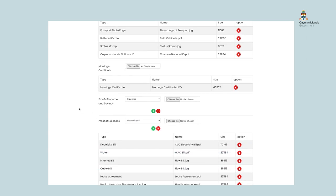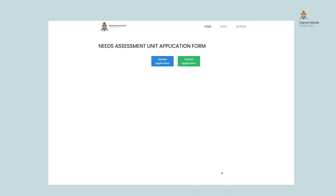When you have completed all six sections of the form with the required information, you will be presented with the option to either review your application details by clicking the Review Application button, or if you believe all the information entered is accurate, proceed to the submission stage by clicking the Submit Application button. When reviewing the form, all the information you supplied will be displayed on screen. If anything is incorrect, you can return to that section and make changes by clicking the Edit button. Otherwise, proceed to step six and click the Submit Application button to finalize the process.